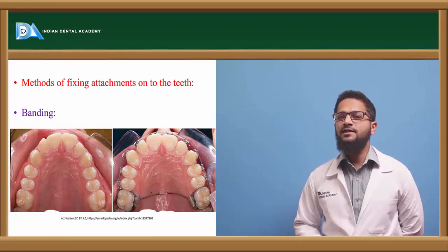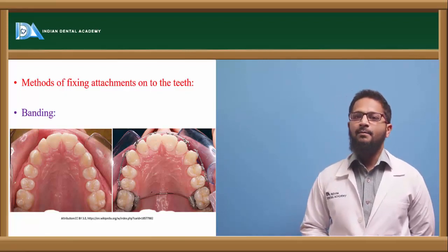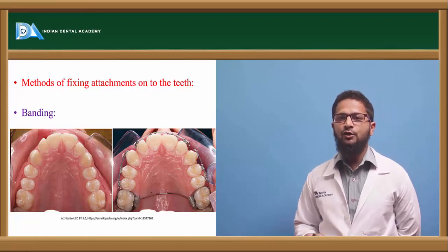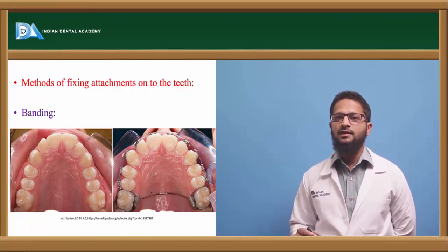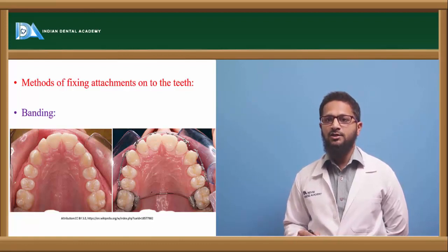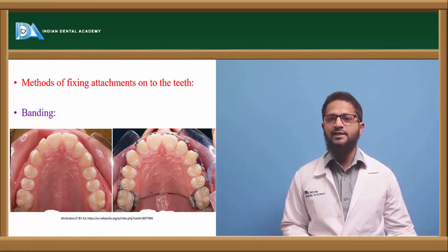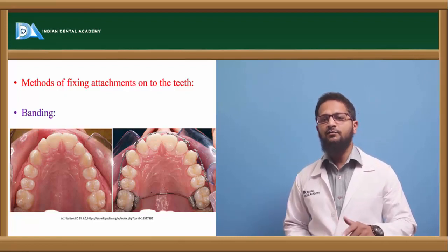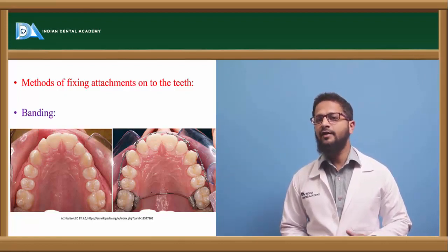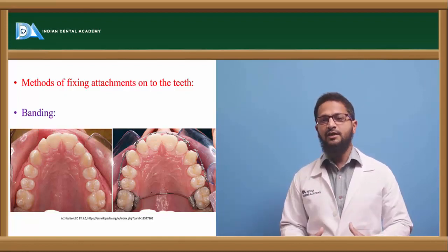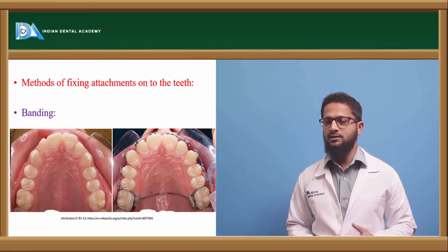Banding is a procedure that involves the use of metal sheets, usually made of stainless steel, placed around particularly posterior teeth — the molars. These bands are pinched around the posterior teeth and then attachments are either soldered or welded onto the bands. The bands are cemented; attachments such as buccal tubes or brackets are welded or soldered on the band material, and then the band is cemented onto the tooth surface.